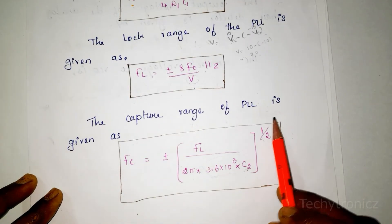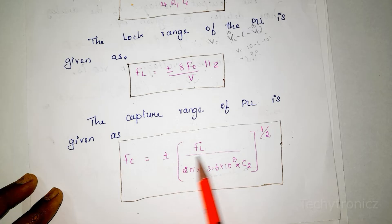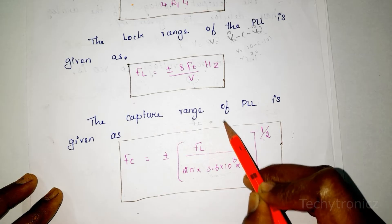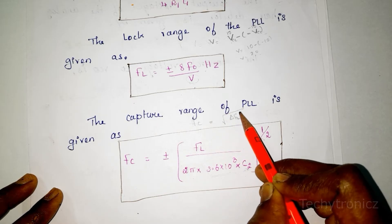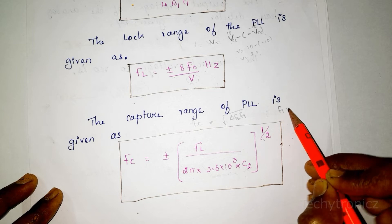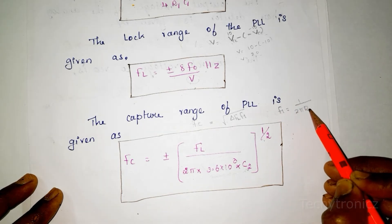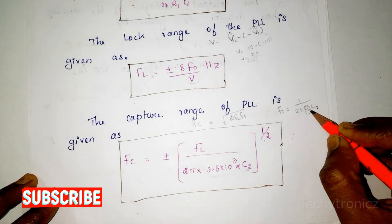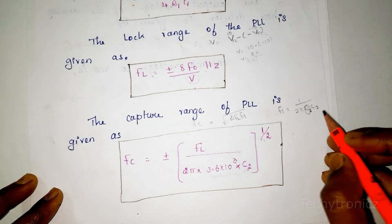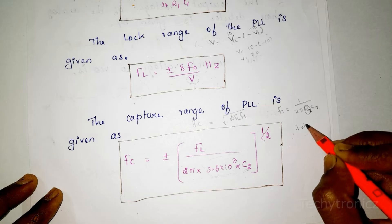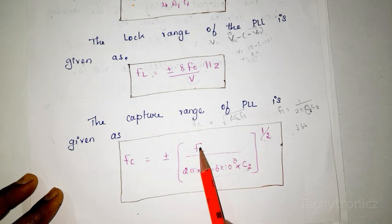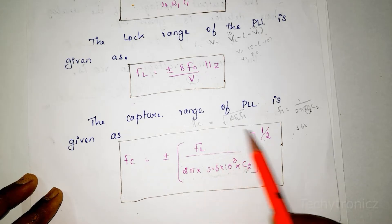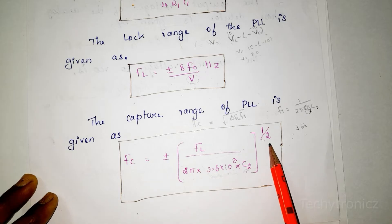The capture range of PLL is given as: Fc = ±√(FL × F1), where F1 = 1 / (2π × R1 × C). Substituting R as 3.6 kΩ, the capture range becomes: Fc = ±(FL / (2π × 3.6k × C2))^(1/2).